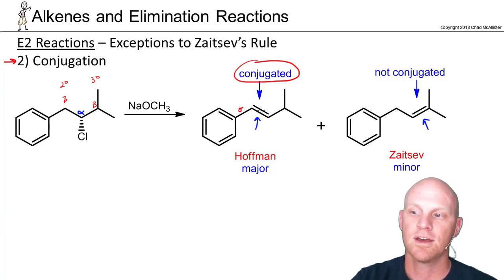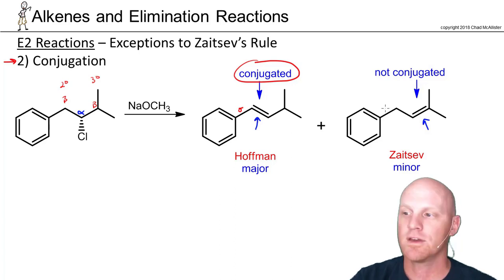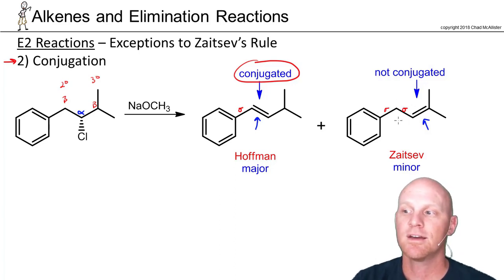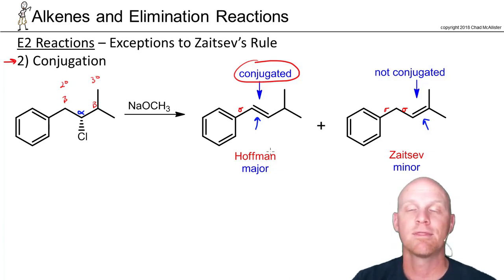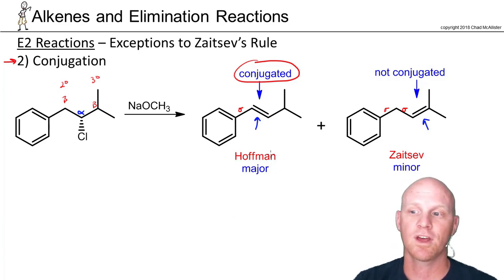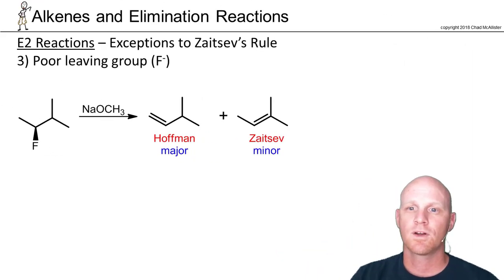A conjugated system leads to delocalization of pi electrons. This occurs most commonly when you have a single sigma bond between pi electrons — those form one big system with delocalization of pi electrons over the entire conjugated system. If you have more than one sigma bond between pi electrons, they're isolated with no delocalization and no lowering of energy. So in this example the most substituted alkene is not the more stable one — the conjugated alkene is more stable. If you have a chance of forming a conjugated alkene, let that take priority over Zaitsev's rule.